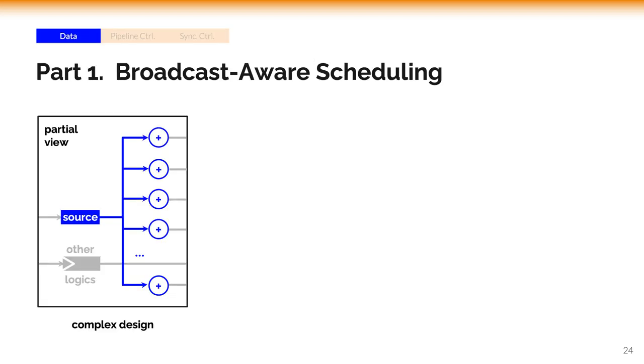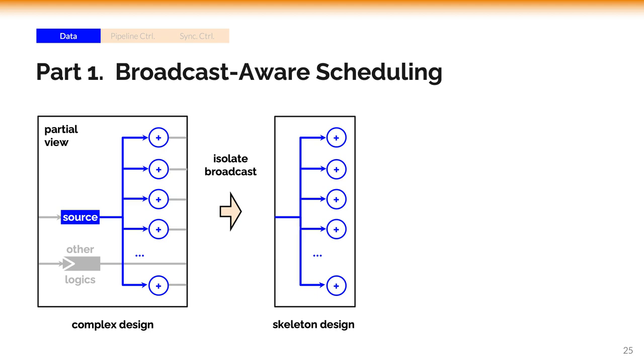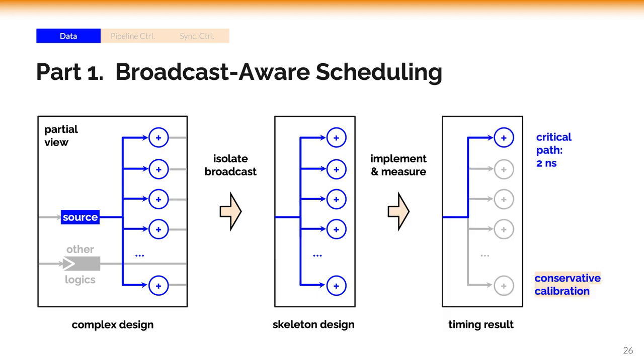For the imperfection in the scheduling of data broadcasts, we propose to calibrate the delay estimation. First, we isolate the broadcast skeleton, and then we measure the additional delay. Since a skeleton design holds nothing but broadcast structure, it's supposed to have better timing than the structure in the complex design. We propose to use the timing result to approximate the lower bound of the delay estimation.